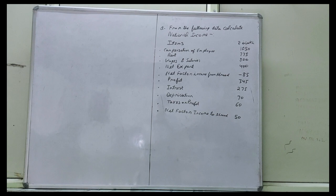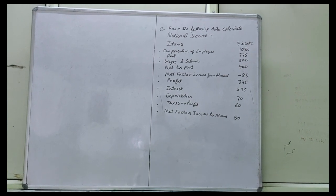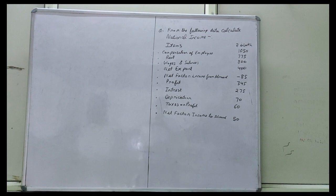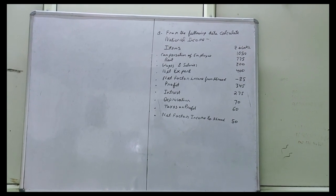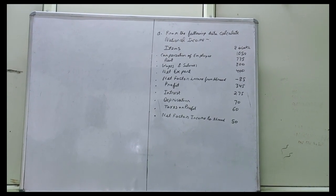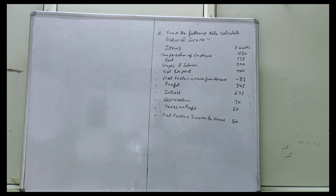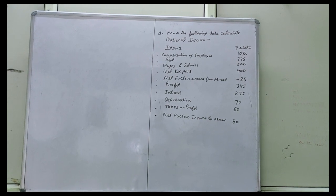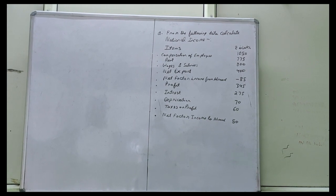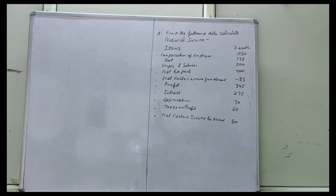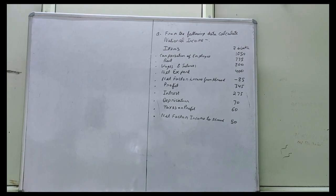Profit 345, interest 275, depreciation 70, taxes on profit 60, net factor income to abroad 50. Note there are two net factor income items — a small hint: net factor income from abroad is always added (plus), and net factor income to abroad is always subtracted (minus).